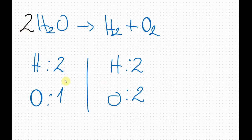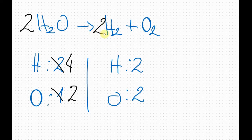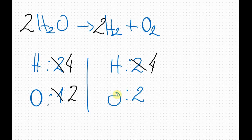Now two by one is two, so I will change the chart to two. Now we can see that the oxygen is balanced, but the hydrogen is no longer balanced — two by two is four. In order to balance the hydrogen I will add a coefficient of two here. Now two by two is four. From the numbers we can see that we have four hydrogens and two oxygens on both sides, so this is a balanced equation.